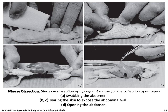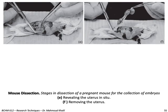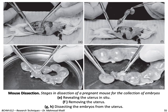To obtain tissue from a mouse, you start by swabbing the abdomen, then tearing the skin to expose the abdominal wall, and then opening the abdomen as shown in figure D. After that, you reveal the uterus in situ, then remove the uterus from the mouse, and then dissect the embryo from the uterus, removing the embryo as shown in figures G and H.